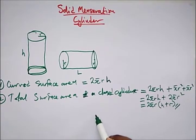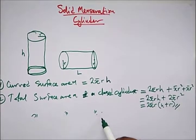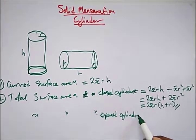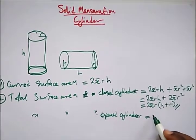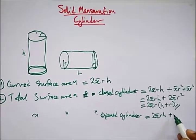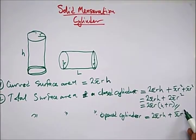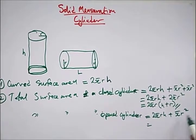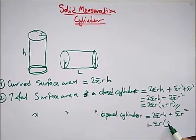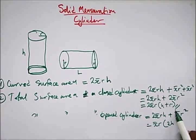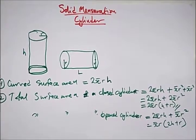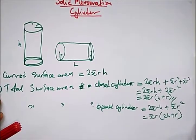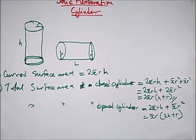The total surface area of an open cylinder, which means it's open at one end, is equal to the curved surface area plus one end that is closed. What is common? We have π and r, so we bring out πr. What's left is 2h + r. So this is the formula for finding the total surface area of an open cylinder: πr(2h + r).